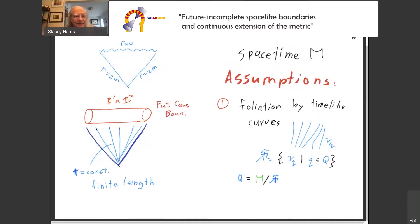Now, the t equals constant curves in this interior are notably a finite length, and so that's the idea that we want to emulate. So I'm going to make a number of assumptions on our spacetime M. And the first one is that there is a foliation by timelike curves. So I'll call these curves gamma sub q, just indexed by some capital Q set.